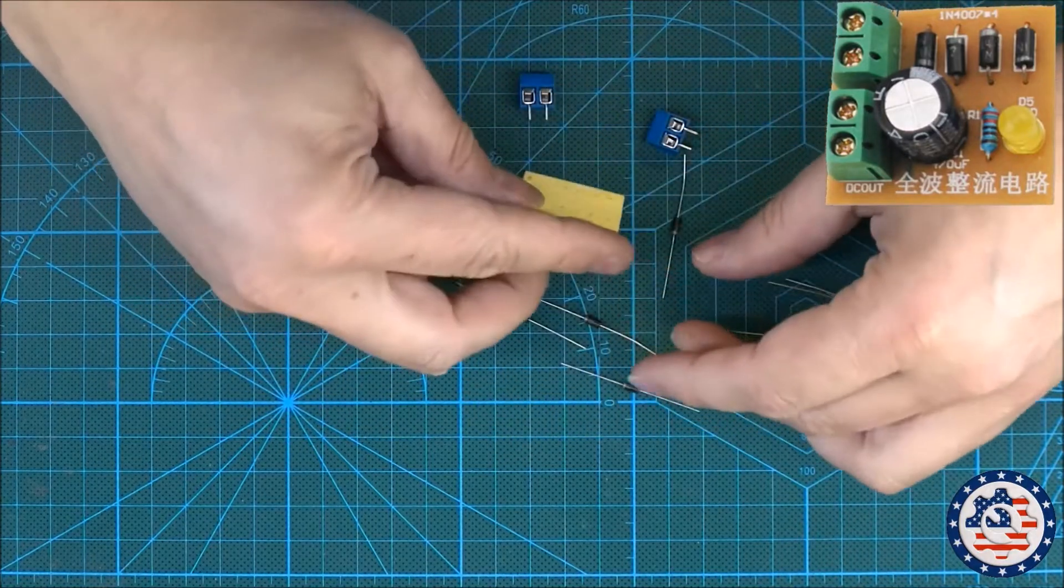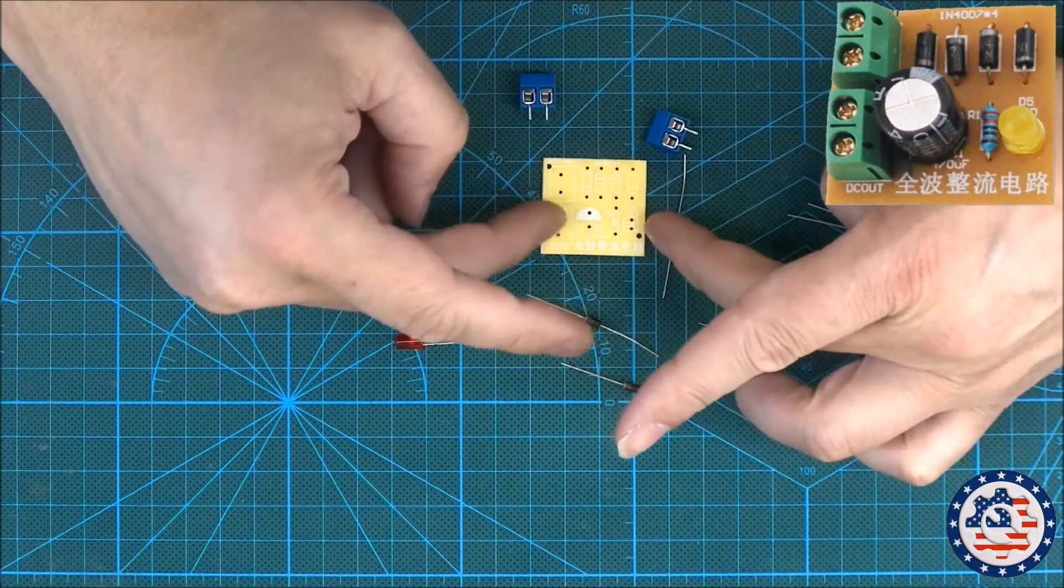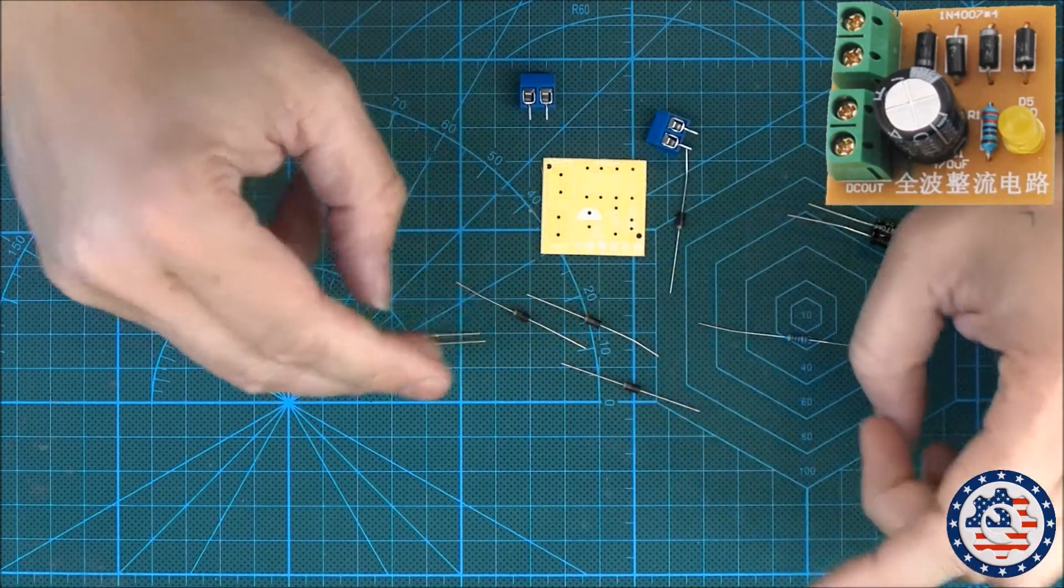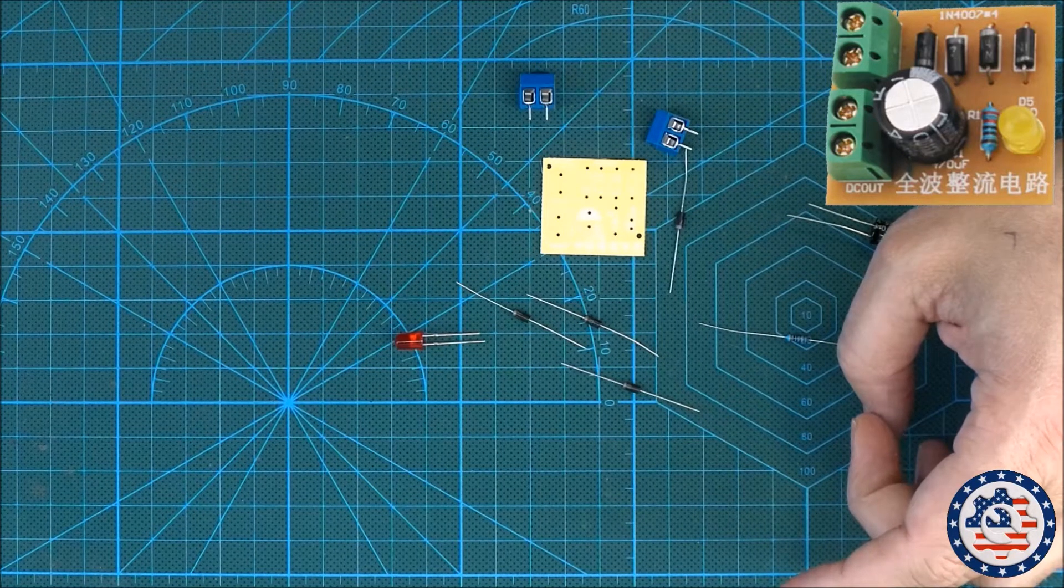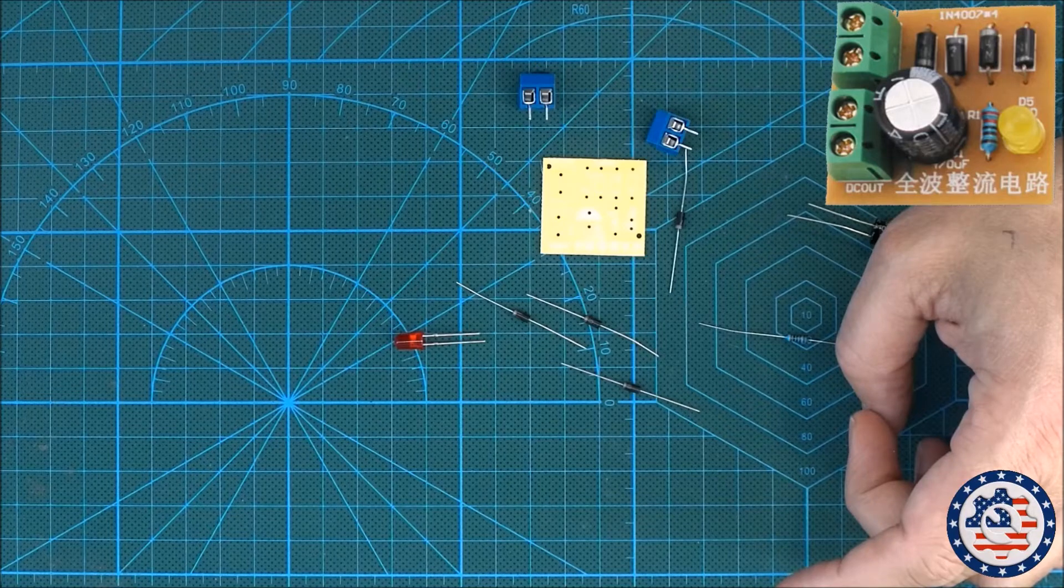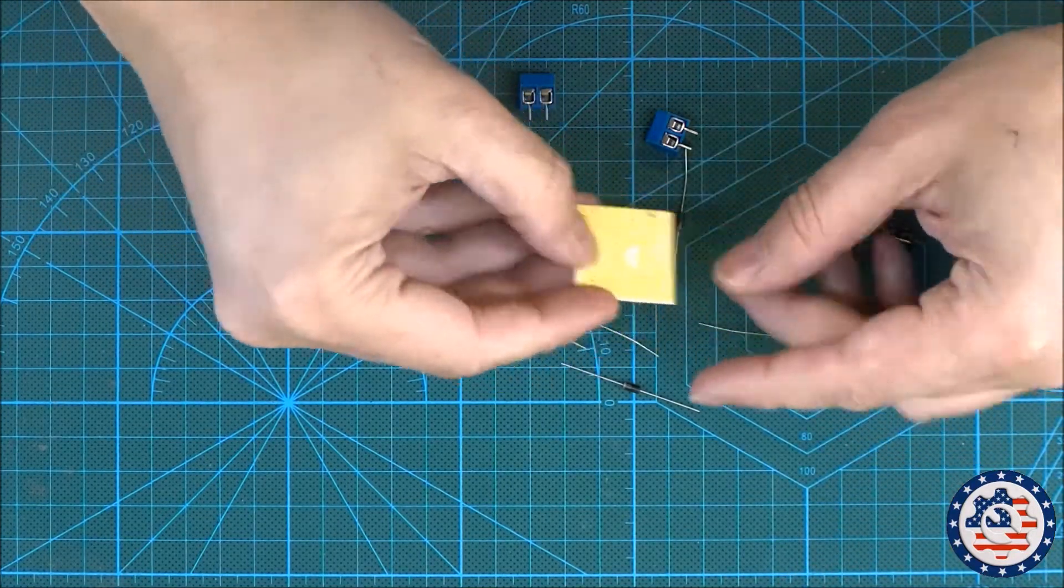So if I turn the PCB over, everything is really marked, pretty straightforward and simple. Let's have a look at this. So let's see if we can assemble this.